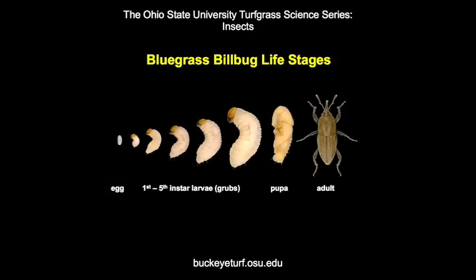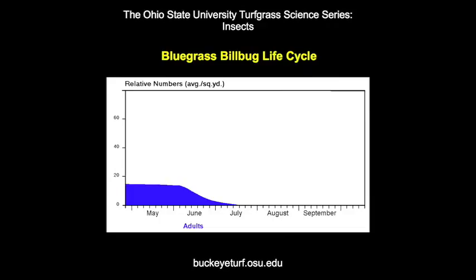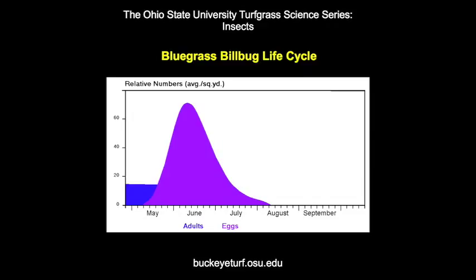Most stem weevils and billbugs overwinter as adults. The bluegrass billbug will serve as an example of a turf-infesting weevil with one generation per year. Adults wander about in the turf, mate, and lay eggs over a long period in the spring and early summer months. The larvae burrow down grass stems before they become too large to fit within the stems, at which point they feed on the crowns, stems, and roots while remaining in the soil and thatch. Mature larvae dig deeper into the soil to pupate or transform into the adult stage. New adults may lay eggs for a partial second generation, but most seek out protected places in or next to the turf to overwinter.